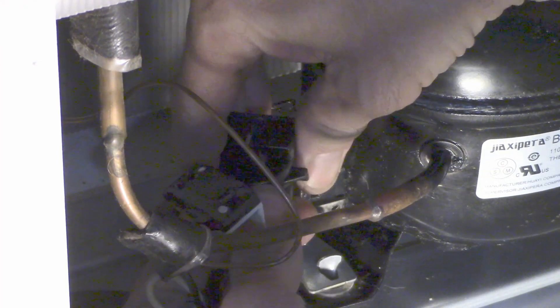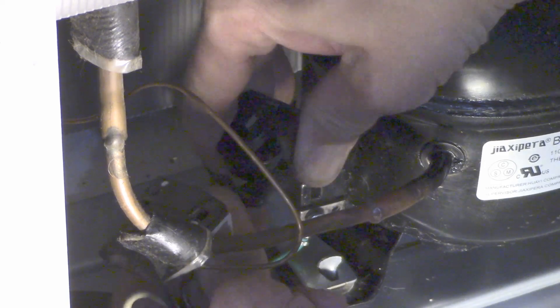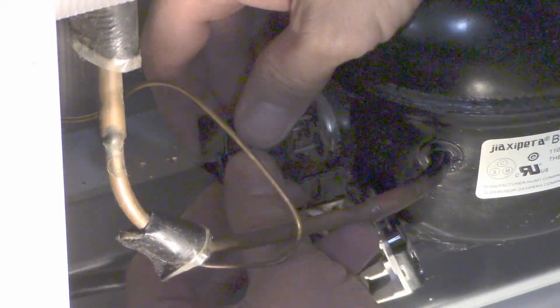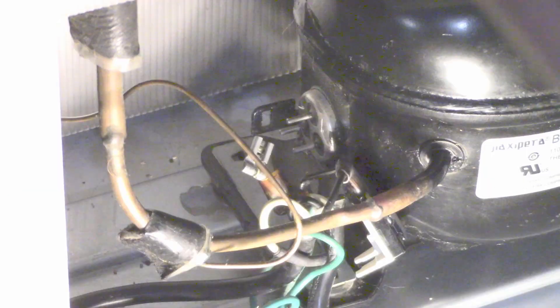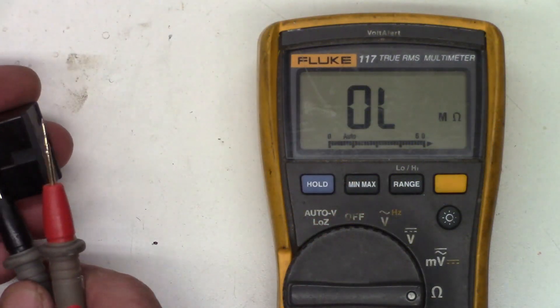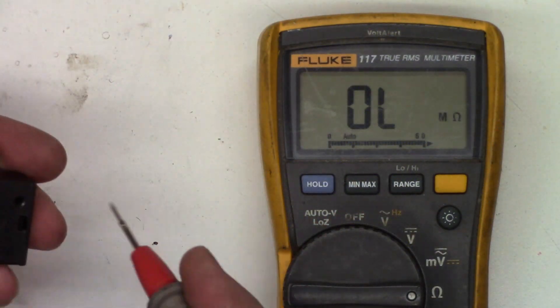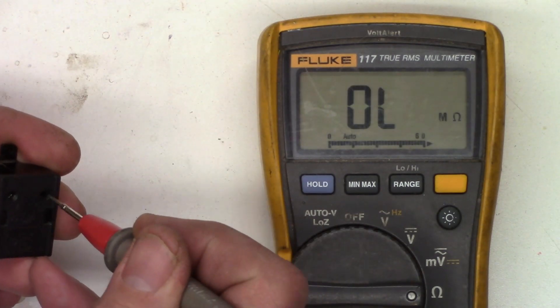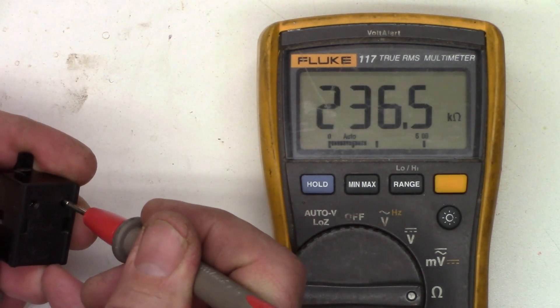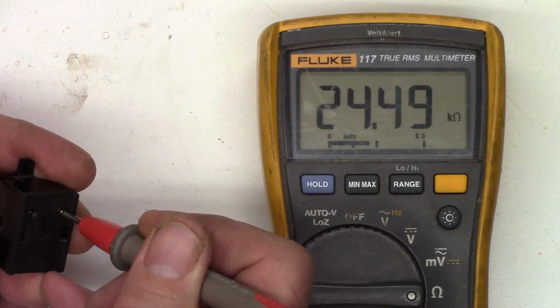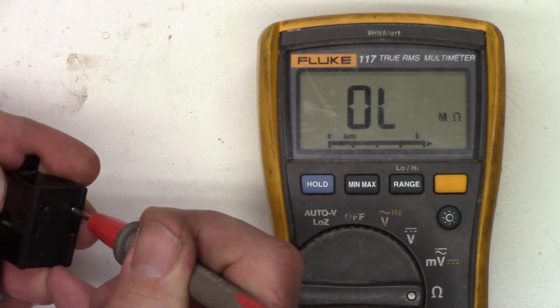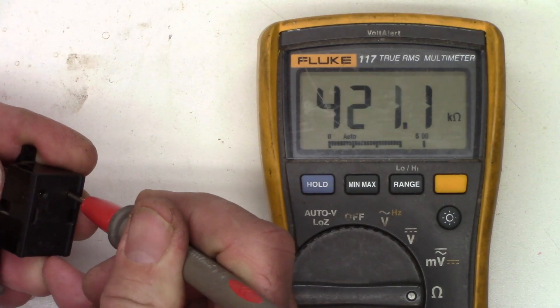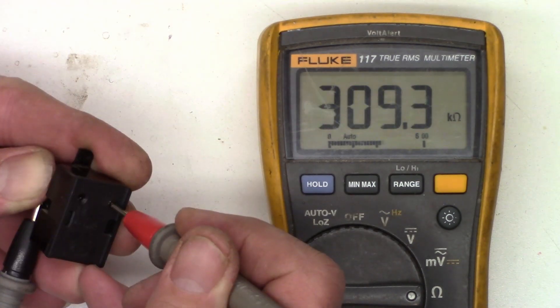So the start thermistor, let's remove the lead from it. There we go. Does not sound good, broken up inside. Okay, let's see if we can get some kind of ohm reading on this. 0.6, and 27K, 400K. That cannot be good.